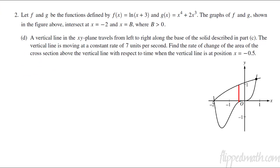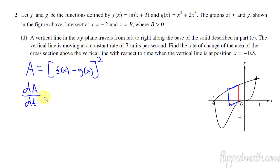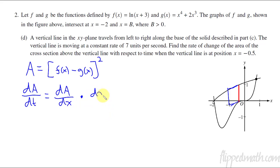Let's first write down a formula for the area of a cross section. Remember if we're doing a cross section, it's coming off the paper and creating a square. So the area is F of X minus G of X, quantity squared. The derivative of area with respect to time equals the derivative of this thing times dx/dt — that's from the chain rule, implicit differentiation. Since we're using a calculator, we can just say dA/dx times dx/dt. We know dx/dt equals 7 units per second from the problem.